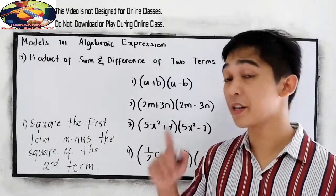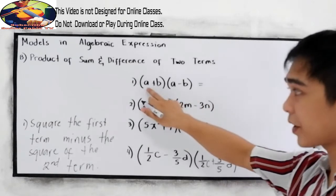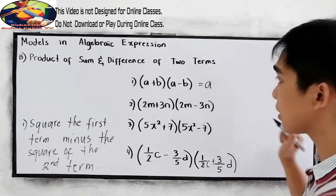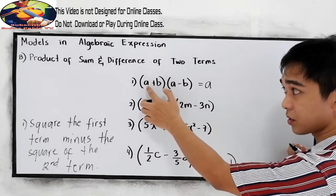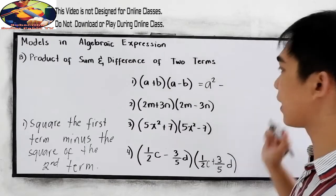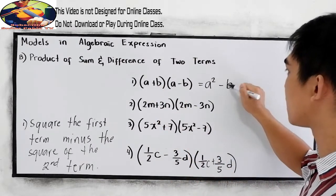Now let us try our first example. So square the first term, that is A. Notice that we have the same first term, A and A. So A squared minus square the second term, which is B squared.